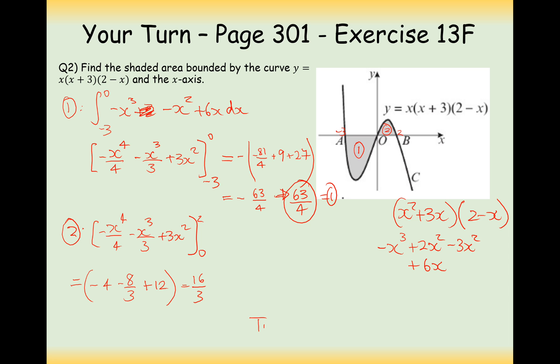So all that's left for us to do now is to work out total area by adding together 16 over 3 and 63 over 4. And we'll get 253 over 12.